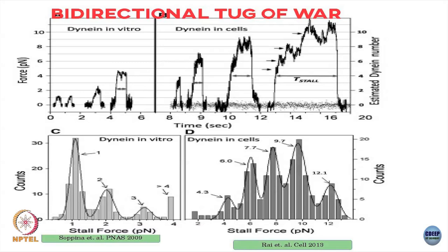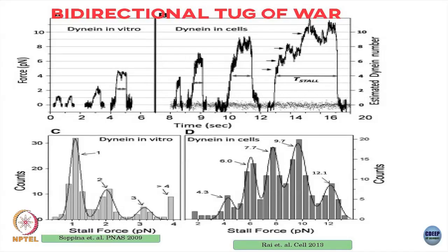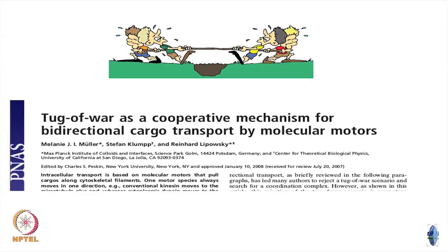One of the questions is: when cargoes are carried by multiple types of motors — not only multiple motors but kinesins as well as dyneins — how do I get transport? One of the most canonical and simplest models says that this cargo motion is ultimately regulated by a tug of war. Tug of war is a mechanism for bidirectional transport.